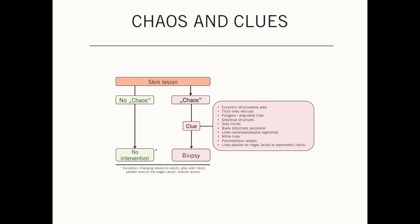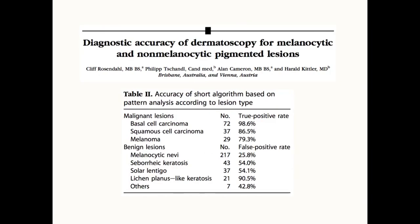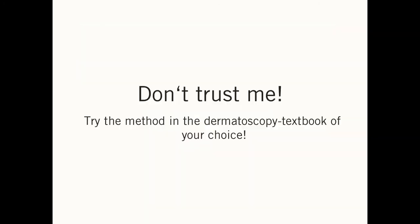To sum it up: in the first step, you look for chaos. If there's no chaos, you don't do anything. If there is chaos, you look for certain clues, and if you find one of them, you biopsy the lesion. This algorithm has also been tested — in this case in Australian patients — and you can see that most malignant lesions can be caught using it. Please try the method yourself in the textbook of your choice, apply the algorithm to lesions there, and when you're familiar enough, use it on your patients.